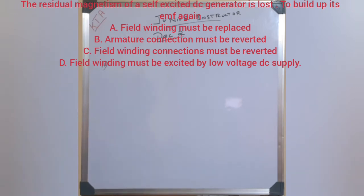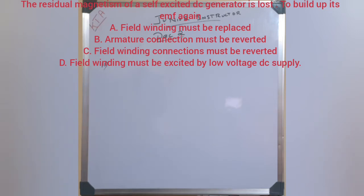A self-excited generator develops EMF using residual magnetism. Residual magnetism is essential for a self-excited generator to build up its EMF. If residual magnetism is lost, the generator cannot develop its EMF on its own.